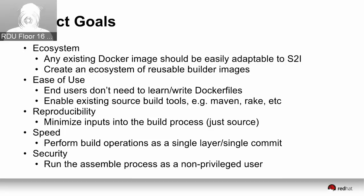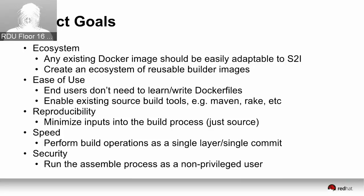Finally, from a security perspective, we wanted all of the assemble logic — where we're building your application — to be done as a non-privileged user. A lot of Dockerfiles default to root; nobody sets the user. We're trying to give people more fine-grained control over what permissions they grant during assembly. This becomes more important in an environment like OpenShift, where we're performing S2I builds and need to ensure that when a random user comes and wants to build their application, we're not letting them build as root on our systems.